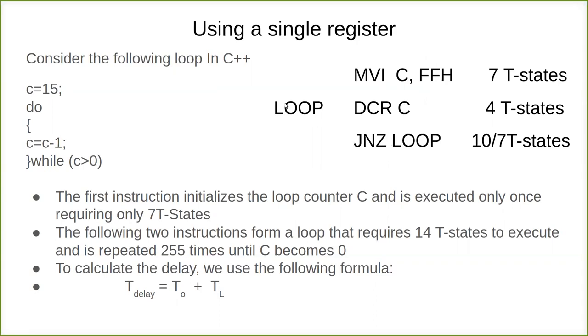Jump on no zero: since the value in C register is not equal to zero, it goes back to the loop. Now it becomes 2, then 1, then 0. When it becomes zero, the zero bit will be set in the flag register. Now the JNZ statement will not get executed, and it quits the loop to the next statement.